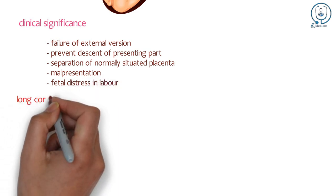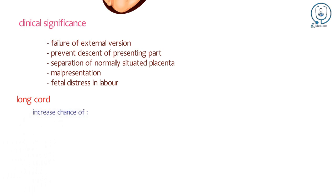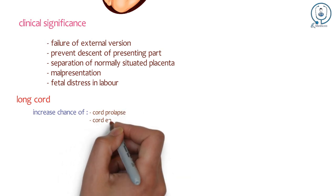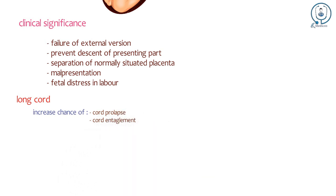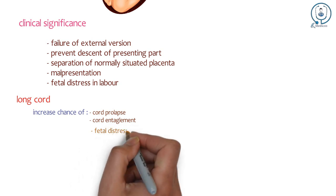Long Cord: The clinical significance due to presence of a long cord is that there is an increased chance of cord prolapse, cord entanglement around the neck or body. This condition may produce sufficient compression on the cord vessels to produce fetal distress or death.